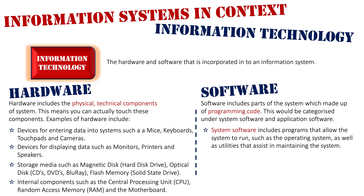There are two sub-classifications within software. The first is system software, which are the programs that allow the system to run, such as the operating system. Here I'm using a Macintosh computer running Mac OS X High Sierra. If you're using a Windows-based system, you're probably using Windows 10. We also have utilities that allow us to manage our system — I have a backup utility called Time Machine which saves backups. Windows machines have things such as disk defragmentation and disk cleanup. System software relates to the use and maintenance of the system.